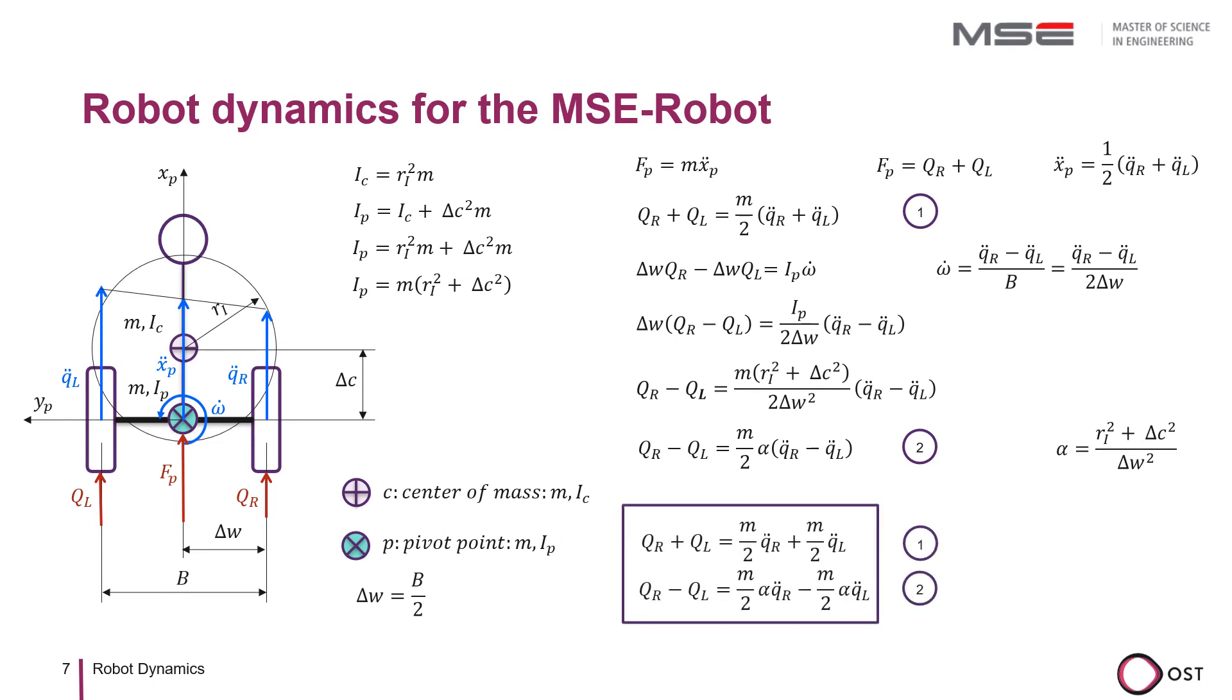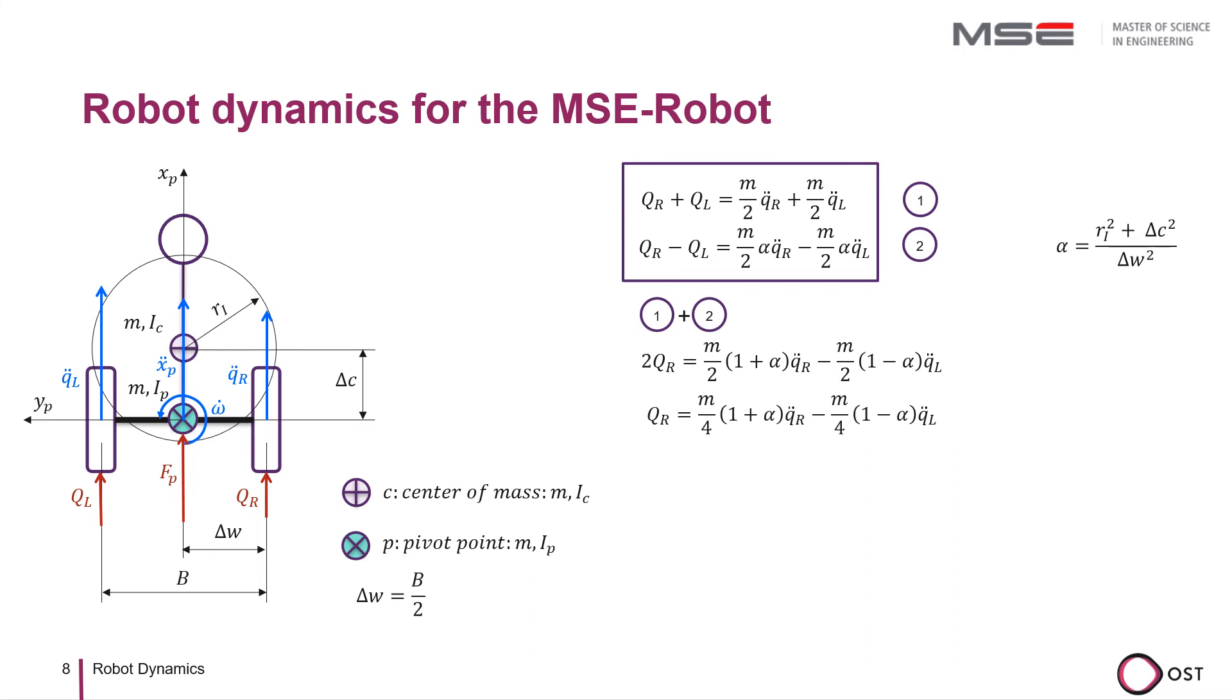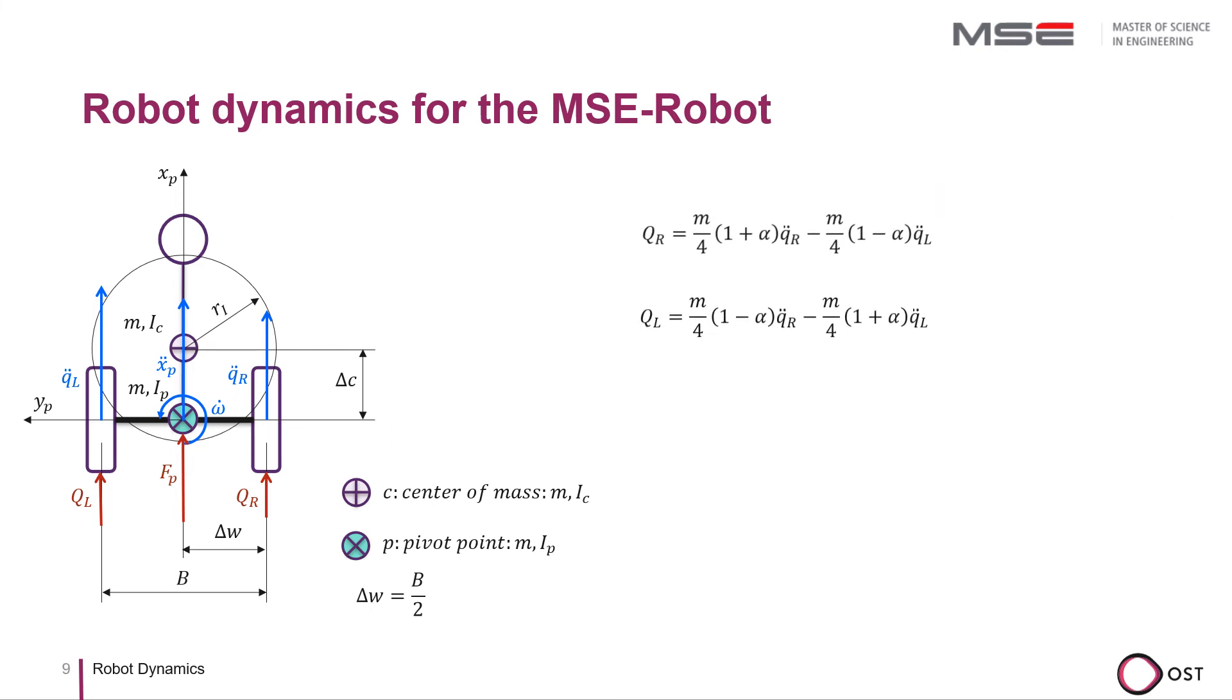We now have two equations with which we can derive the mass matrix. We now add the two equations, which gives us QR and eliminates QL. We calculate the difference of the two equations, which gives us QL and eliminates QR.